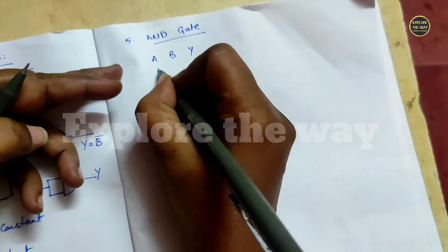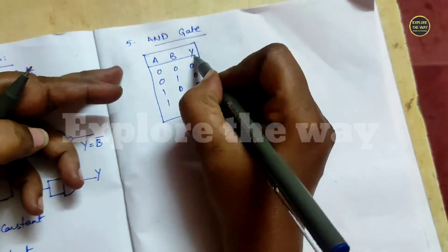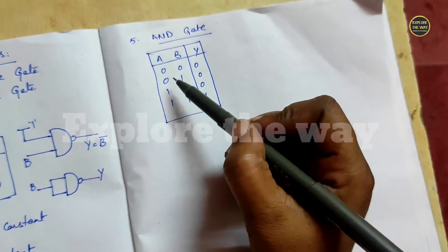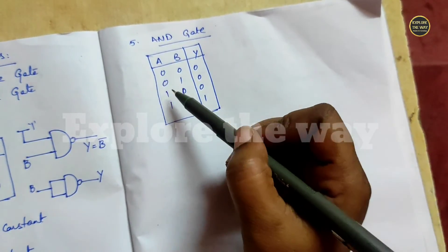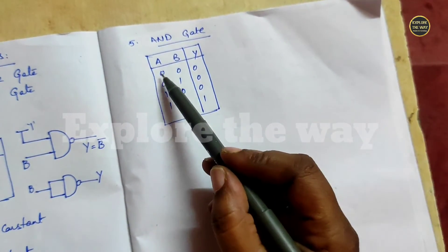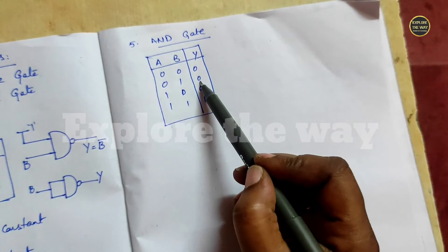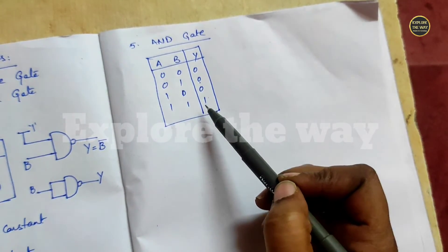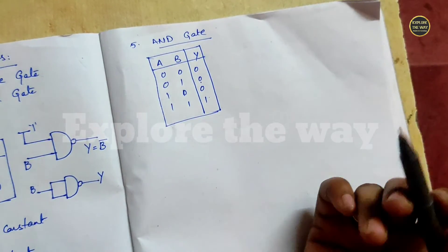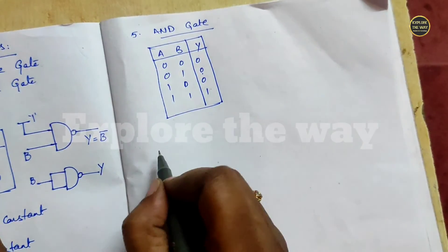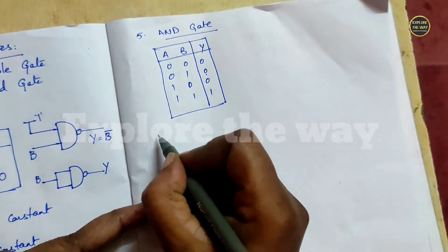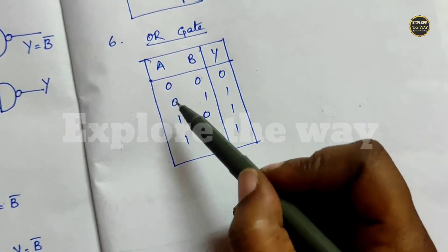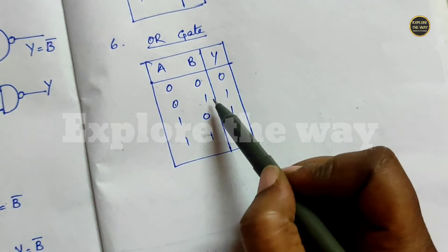Next, the AND gate. See the AND gate functionality. Make one of the inputs A constant. When A is 0, output is 0; when A is 1, output is the same as the second input. So we cannot derive inverter functionality from the AND gate.